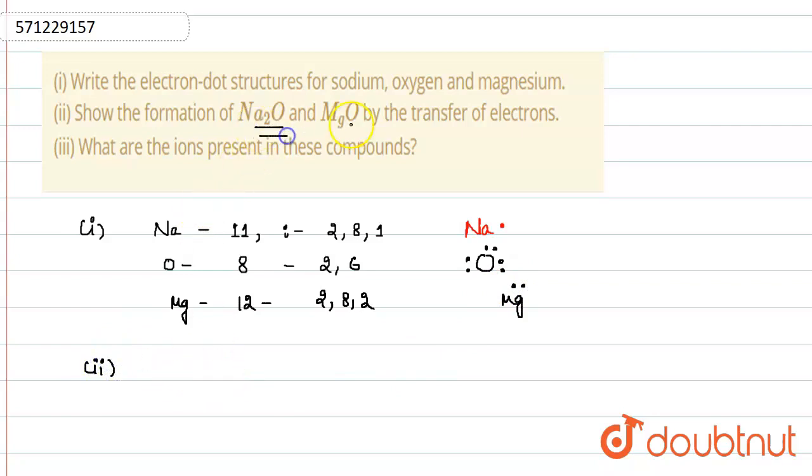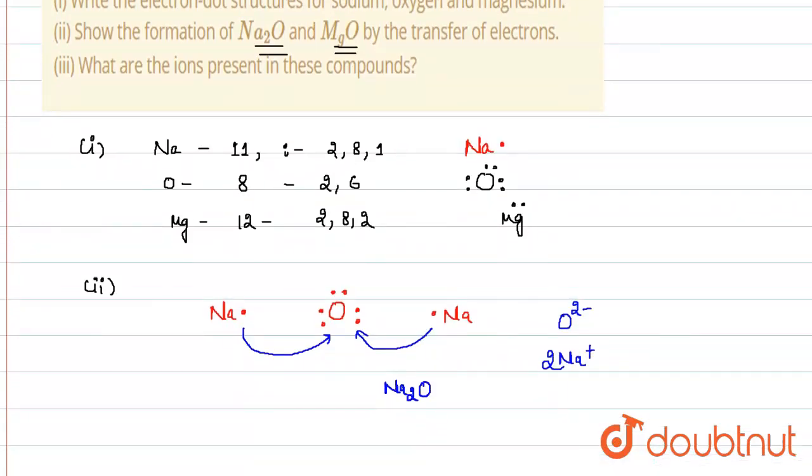The next part we are going to discuss is: show the formation of Na2O and MgO by the transfer of electrons. As we have seen earlier, each sodium has one electron and oxygen has six electrons in the outer shell. Two sodiums are involved. Each sodium transfers one electron to oxygen. That's why formation of O2- and Na+ takes place. Formation of O2- and two Na+ are involved, that's why formation of Na2O occurs.